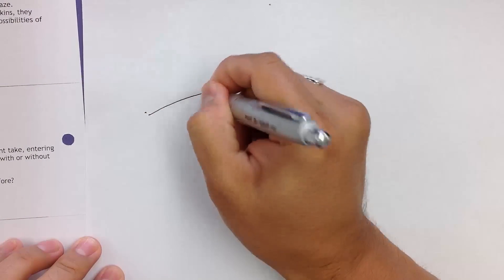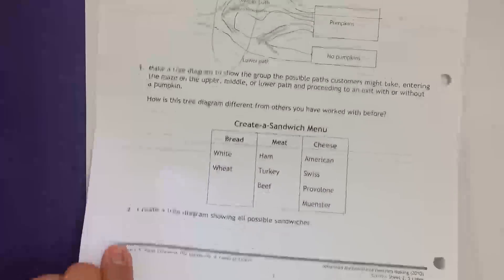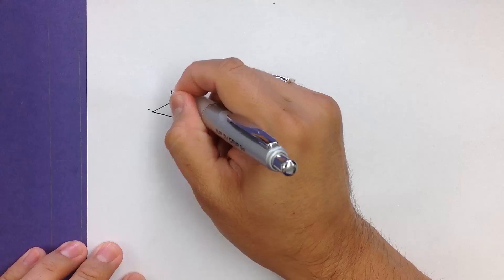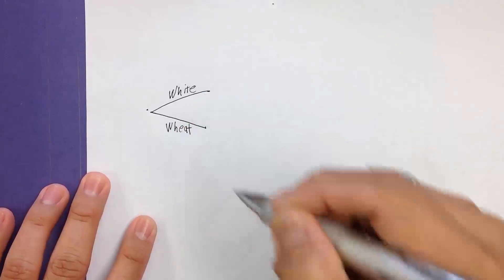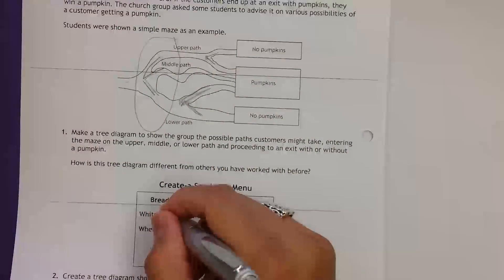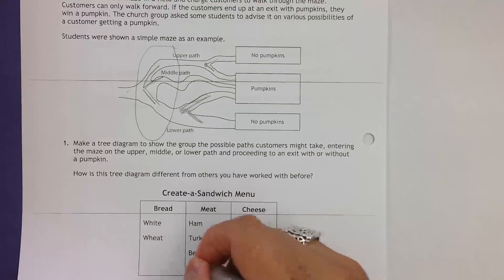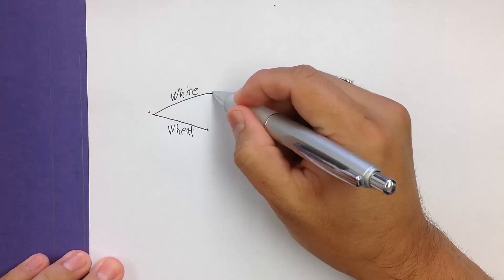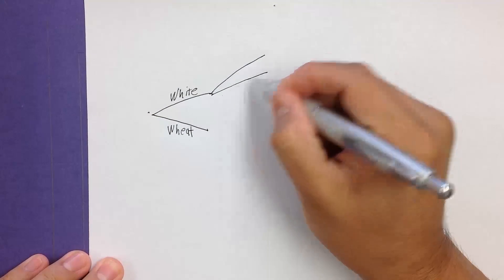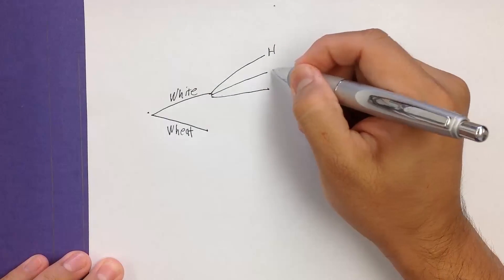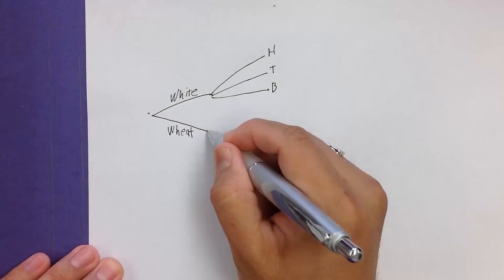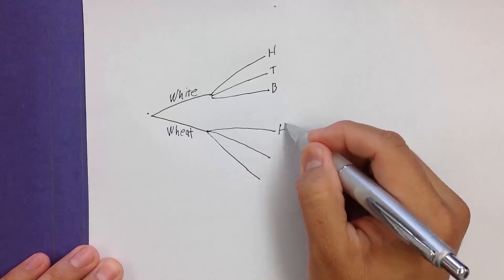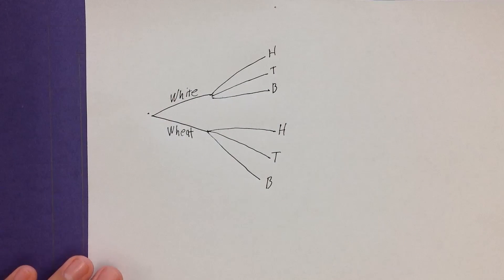We have two branches because we have two choices from the beginning. We either have white bread or wheat bread. Then if we choose white, we have a choice of any of the meats: ham, turkey, or beef. And then the same thing branches from wheat — ham, turkey, or beef. So those are the meat choices after each bread choice.